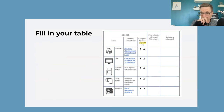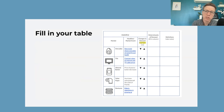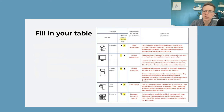Here we have a table that the students fill out in their student activity sheet. These are all real-life events that move demand curves, and the students have to think about which way the demand curve is going to shift — is it going to shift out or shift back? — and then which of the determinants — taste, related goods, income, buyers, expectations — is driving that change. And then, just so you have it, here are all the answers written up.